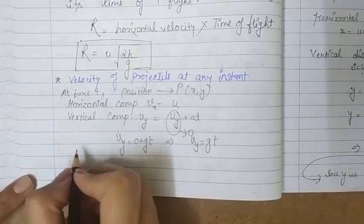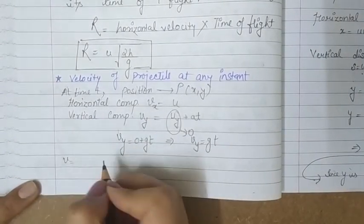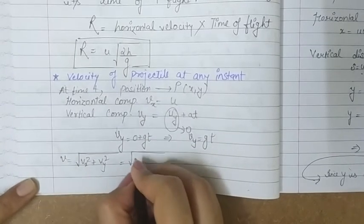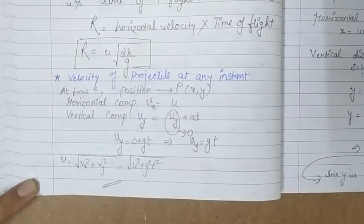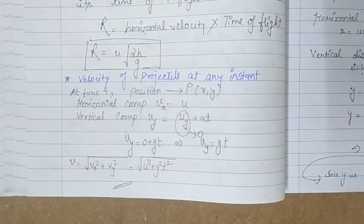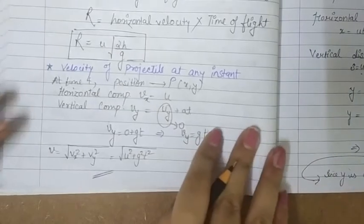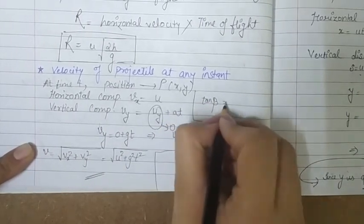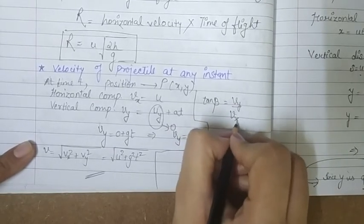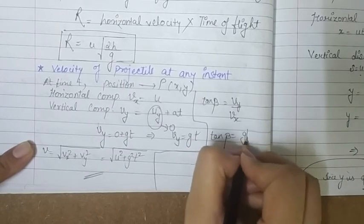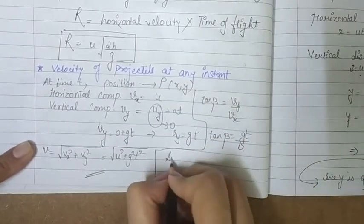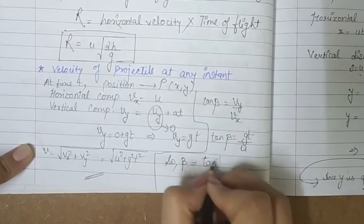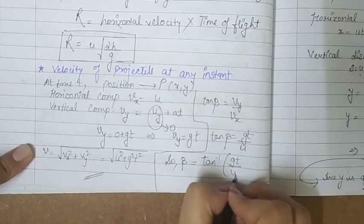Now having vx and vy, the magnitude of the resultant velocity is v = √(vx² + vy²) = √(u² + g²t²). For the direction, tan β = vy/vx = gt/u, so β = tan⁻¹(gt/u). This gives the direction of velocity from the horizontal at any instant t.